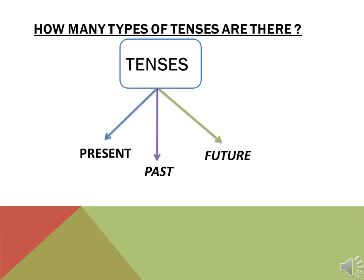How many types of tenses are there? They are 3 in number as given in the diagram: present tense, past tense, and future tense. And again they are further divided into sub points, which we will see in the next slide.